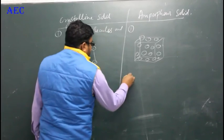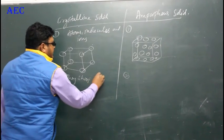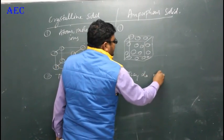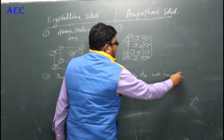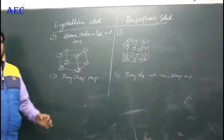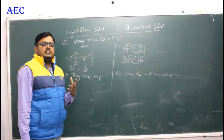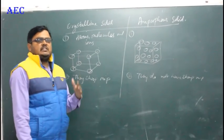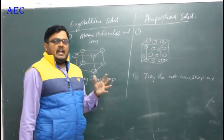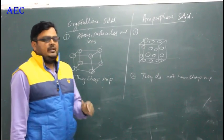The second point of difference: crystalline solids have a sharp melting point — a fixed melting point. For example, if a solid's melting point is 400 Kelvin, it will melt exactly at 400 Kelvin. Amorphous solids do not have a sharp melting point; where density is higher it takes more time to melt, and where density is lower it melts faster, because there is no regular arrangement.